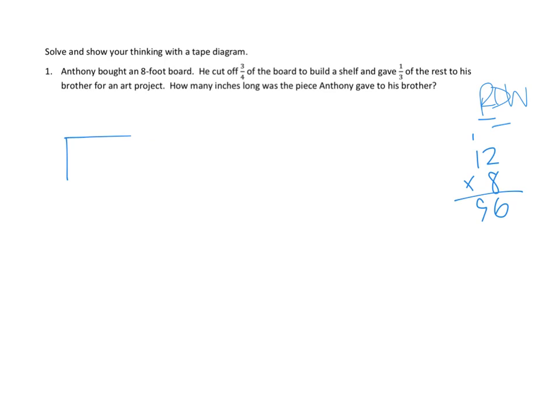All right. The nice thing about a tape diagram and a board is they're shaped exactly the same way. So this is 96 inches long, and that's the board that he bought. He cut off three-fourths of the board to build a shelf. Three-fourths. Okay. So let's figure out how we're going to draw three-fourths. Fourths. I need to divide my board into fourths. And then I need to say that three of those parts, three-fourths, are for the shelf. I'm going to just label that shelf.